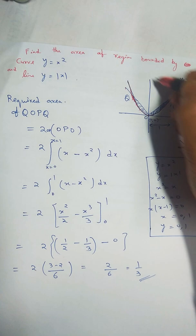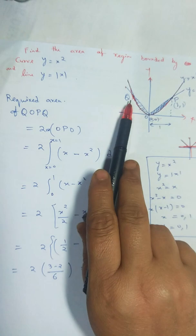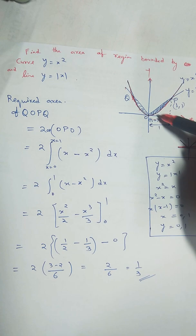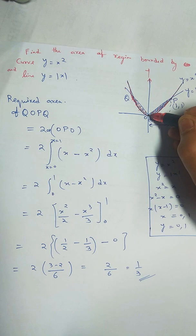Then we have to find the required area - find the area of OQPQ. Means this whole region. This is a symmetrical figure, okay? So if we find only OPO, then we multiply by 2, and we will get the required area.